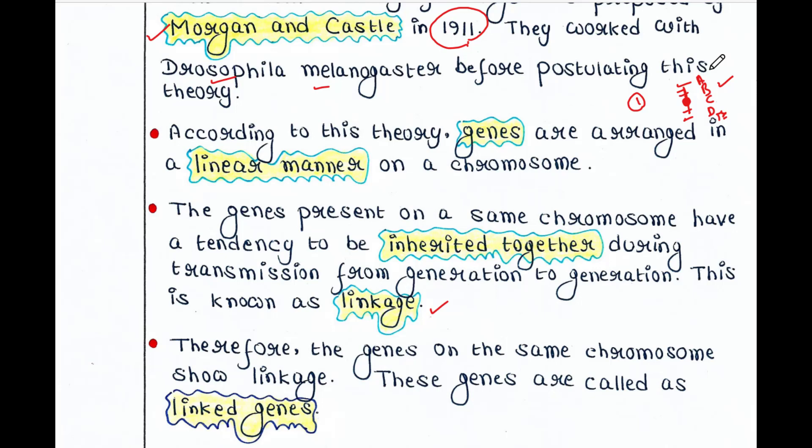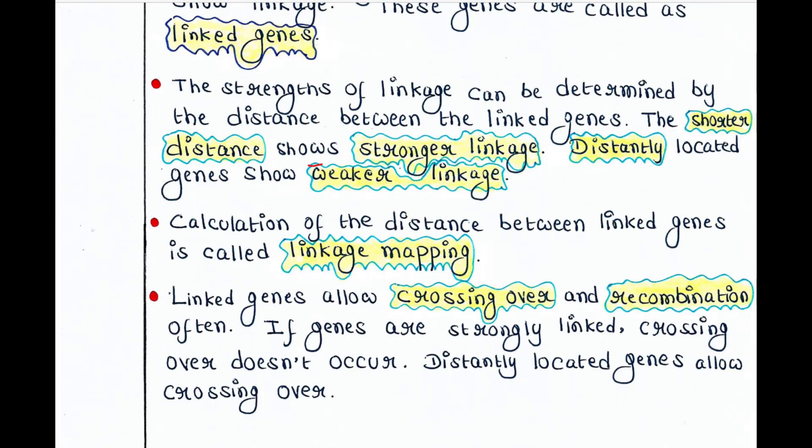Greater would be the probability that they will be transmitted to the progeny in the same manner. Calculation of the distance between linked genes is called linkage mapping. We can calculate the distance between A and B, or A and C, or A and E — that is called linkage mapping. Linked genes allow crossing over and recombination often. If genes are strongly linked, crossing over doesn't occur. Distantly located genes allow crossing over.